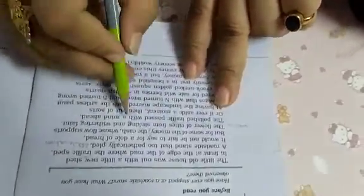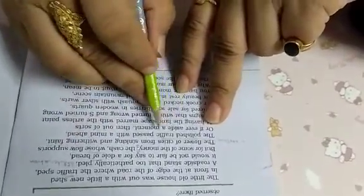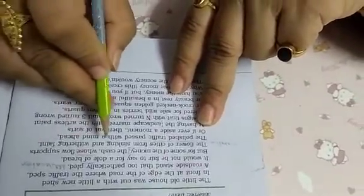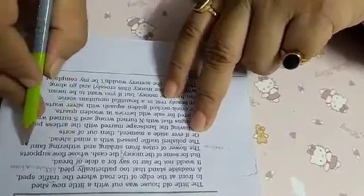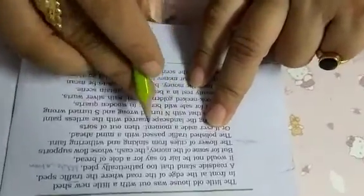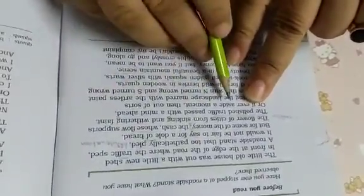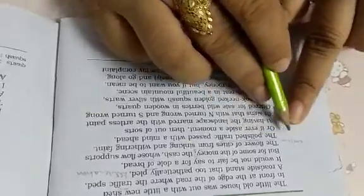Now going ahead: 'The cash whose flow supports the flower of city from sinking and waning.' The poet is saying that the farmer is sitting there just to earn some money, because with the help of this money the flower of the city is also grooming or blooming or flourishing. Means metaphor is here. All the poetic devices I will tell you later on on a piece of paper.